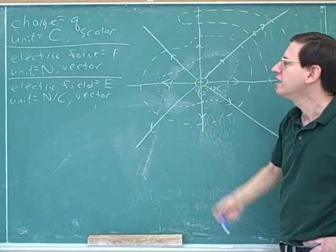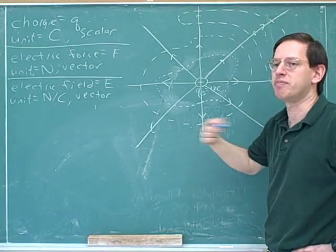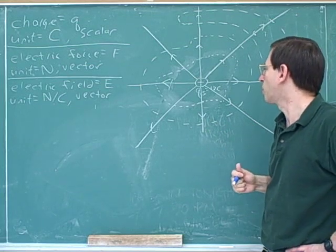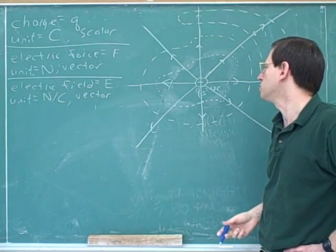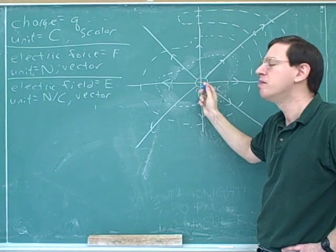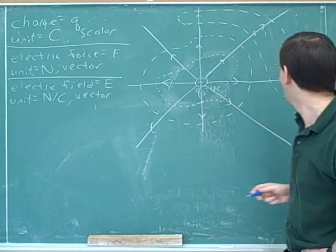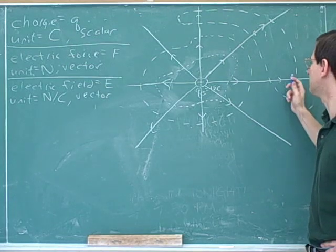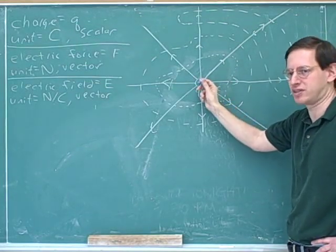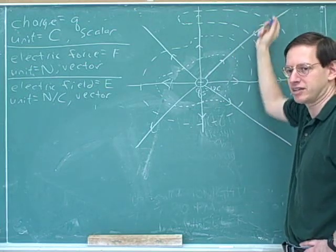What this shows us is the net amount of electric field that is exiting the surface is proportional to the amount of charge that's enclosed — but only the amount of charge that's enclosed. The net amount for the surface is not affected by the amount of charge that's outside the surface, because anything coming in from outside the surface is eventually going to exit.